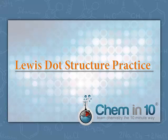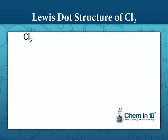In this video, we're going to practice drawing some Lewis dot structures with two relatively simple compounds. The first one is chlorine gas. Chlorine is a diatomic molecule, there are two chlorines bonded together.